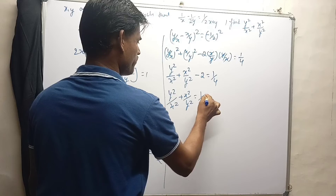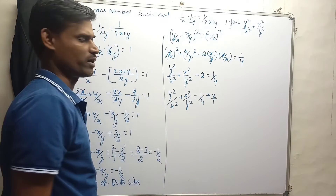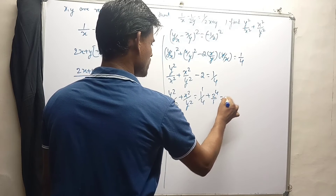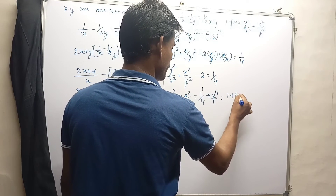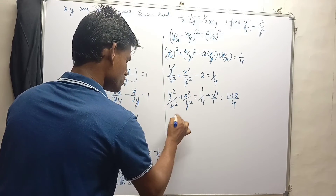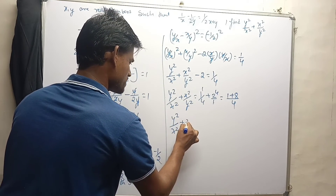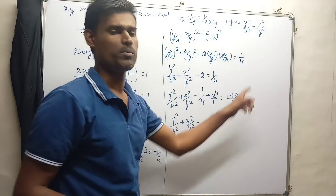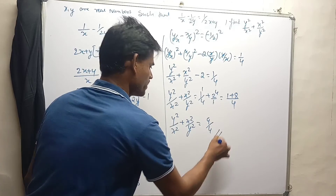Then y²/x² + x²/y² equals 1/4 + 2. Finding the LCM of 1 and 4, that is 4, so we get 1 + 8 divided by 4. Therefore y²/x² + x²/y² equals 9/4.